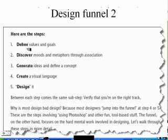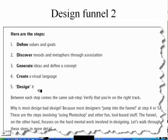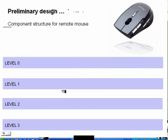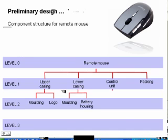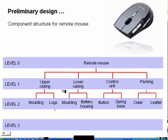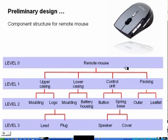Design funnel stage two: define values and goals, discover moods and metaphors through association, generate ideas and define the concept, create a visual language, and then design it. For example, if you were designing a new mouse, those are the steps you would go through.